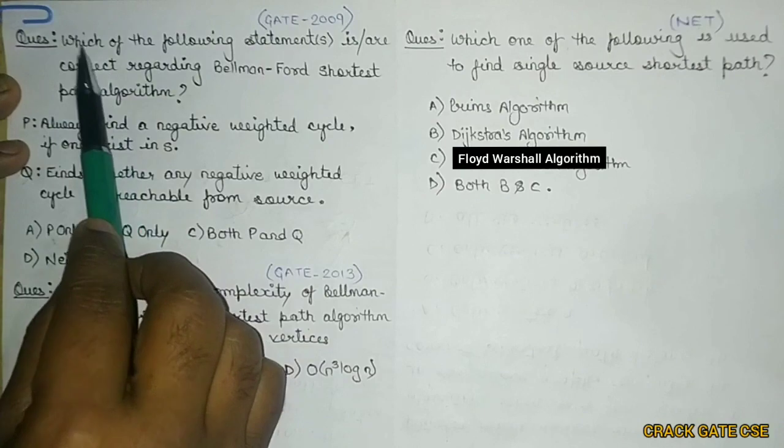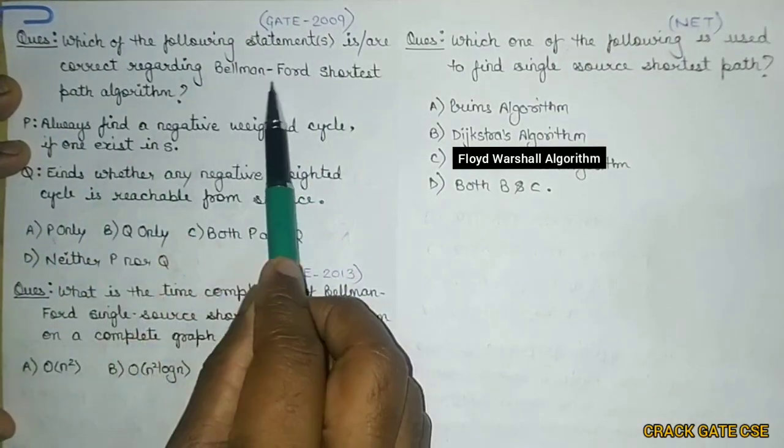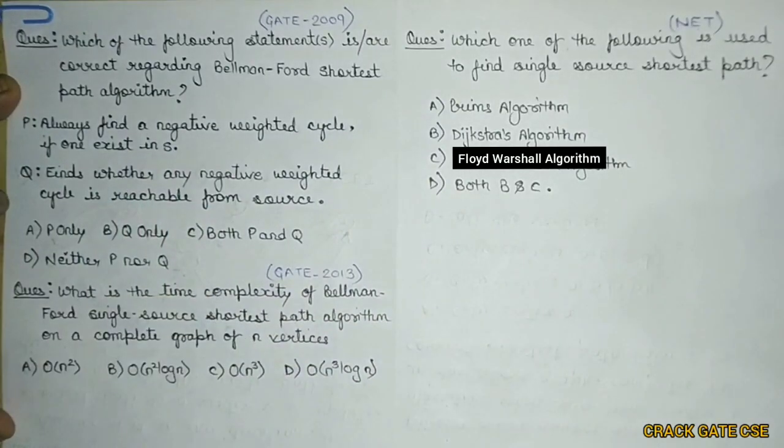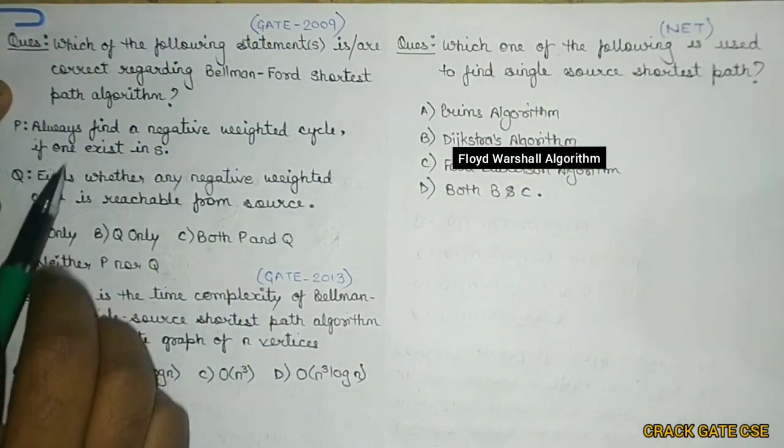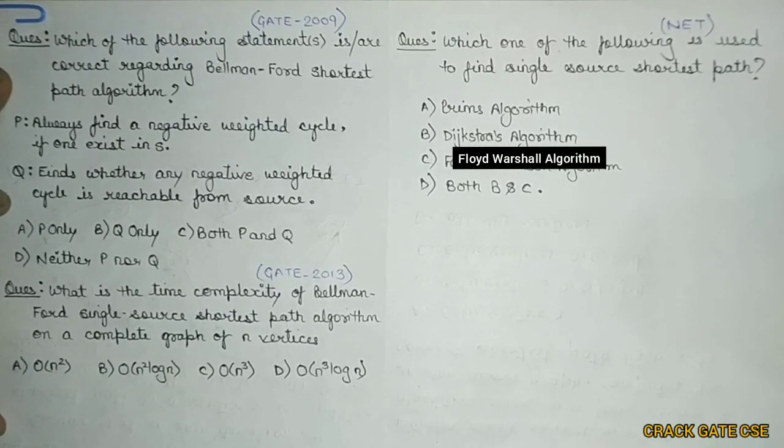So the first question is which of the following statement is or are correct regarding Bellman-Ford shortest path algorithm? So here it is asking that among these two, which one is correct. So there are two statements, P and Q. He is asking which of the particular statement is true with respect to Bellman-Ford shortest path algorithm.